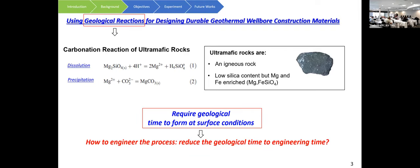The geological reaction here mainly refers to the carbonation reaction of ultramafic rock. Ultramafic rock is an igneous rock low in silica but enriched in magnesium and iron. This carbonation reaction has two steps: first dissolution, then precipitation. The main challenge we face is that this reaction takes geological time to complete at surface conditions — meaning ambient temperature and ambient pressure. The engineering problem for us is: how do we reduce geological time to engineering time?